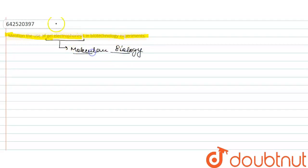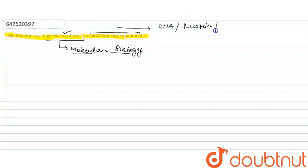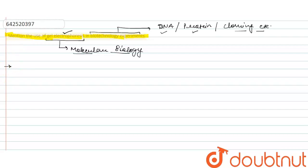This technique is very significant. So let's understand the use of this technique. In biotechnological experiments, this experiment is based on DNA, protein, cloning, and so on. For the separation of DNA and for the separation of protein molecules, we can use gel electrophoresis, because if we give a proper definition of gel electrophoresis: